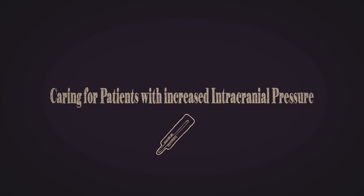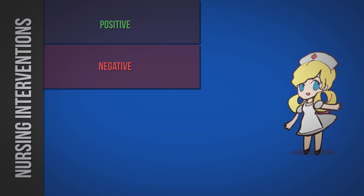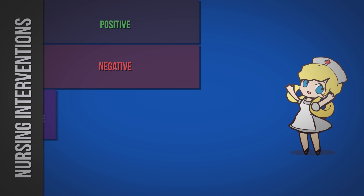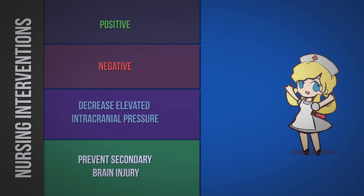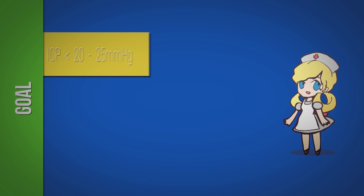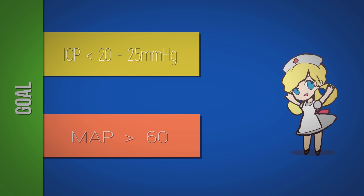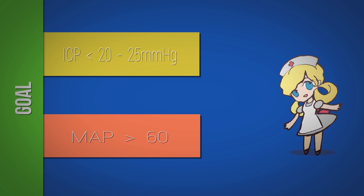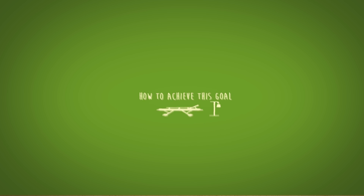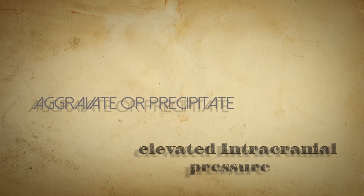Nursing interventions can positively or negatively affect intracranial pressure. Nurses have a unique opportunity to manage patient care in order to decrease elevated intracranial pressure and prevent secondary brain injury. The goal is to maintain intracranial pressure at less than 20–25 mmHg and cerebral perfusion pressure at greater than 60 mmHg by maintaining adequate mean systemic arterial pressure levels, while avoiding factors that aggravate or precipitate elevated intracranial pressure.